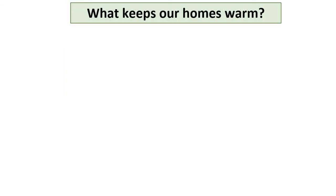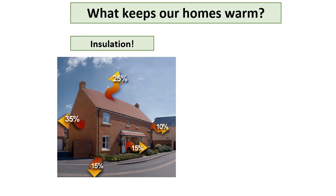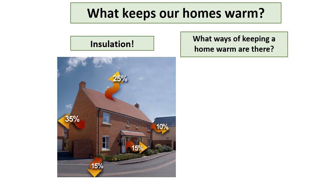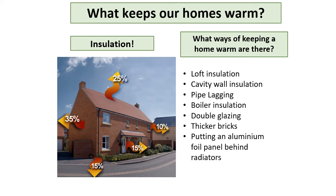Insulation is the best solution to keep heat inside. Pause and discuss with your partners what ways there are to keep a home warm. Solutions include: loft insulation, cavity wall insulation, pipe lagging, boiler insulation, double-glazing windows, thicker bricks, and placing aluminium foil panels behind radiators.